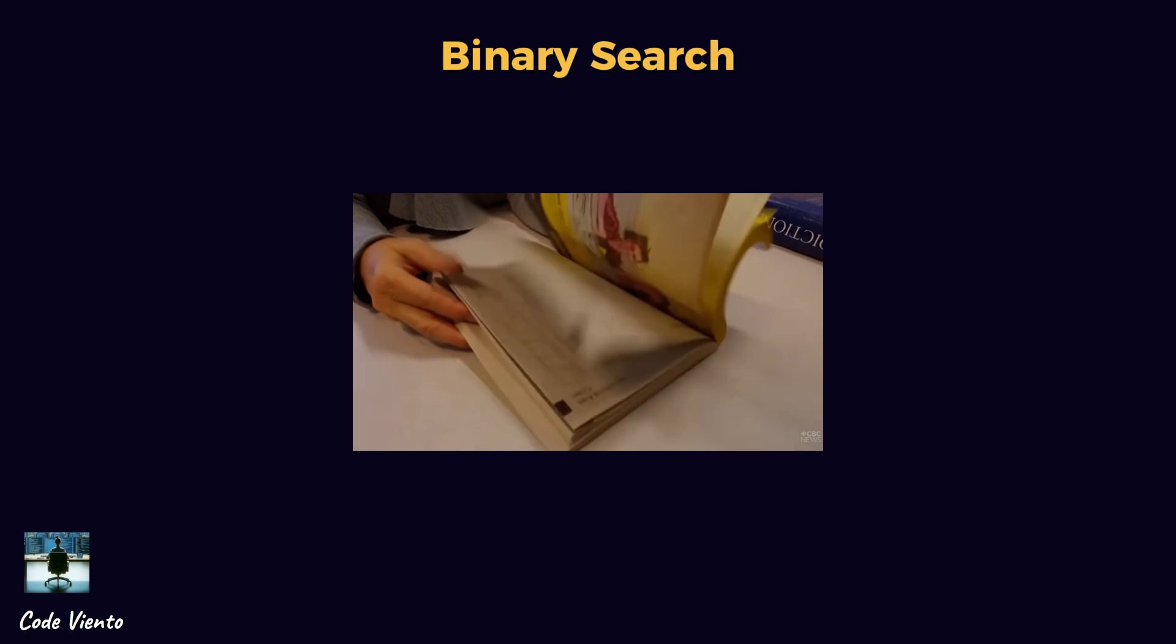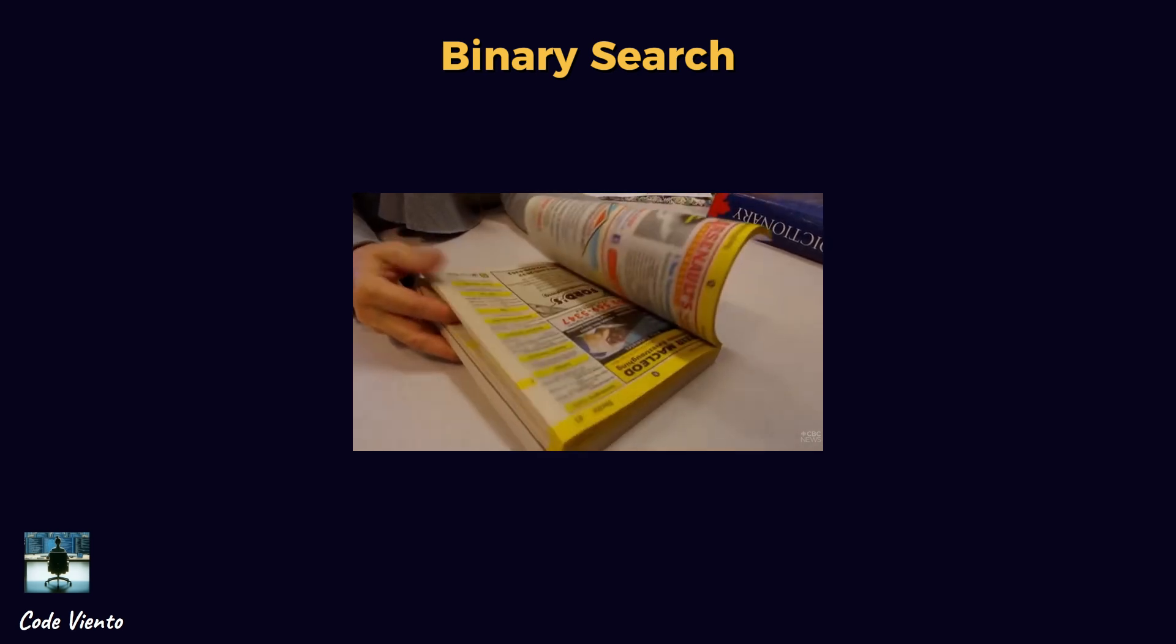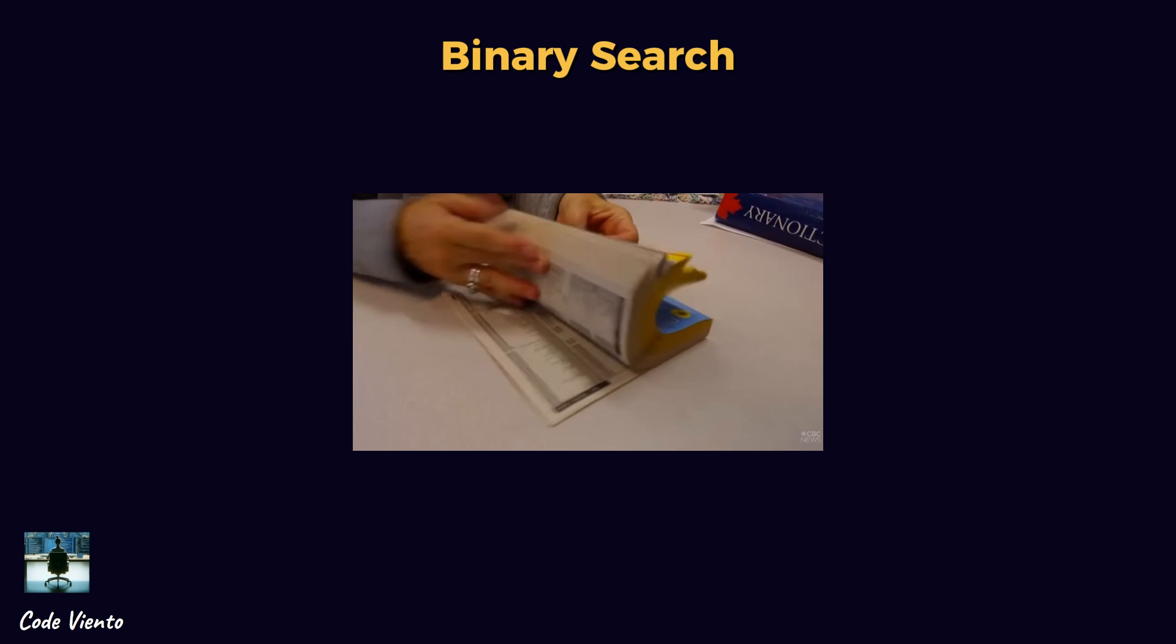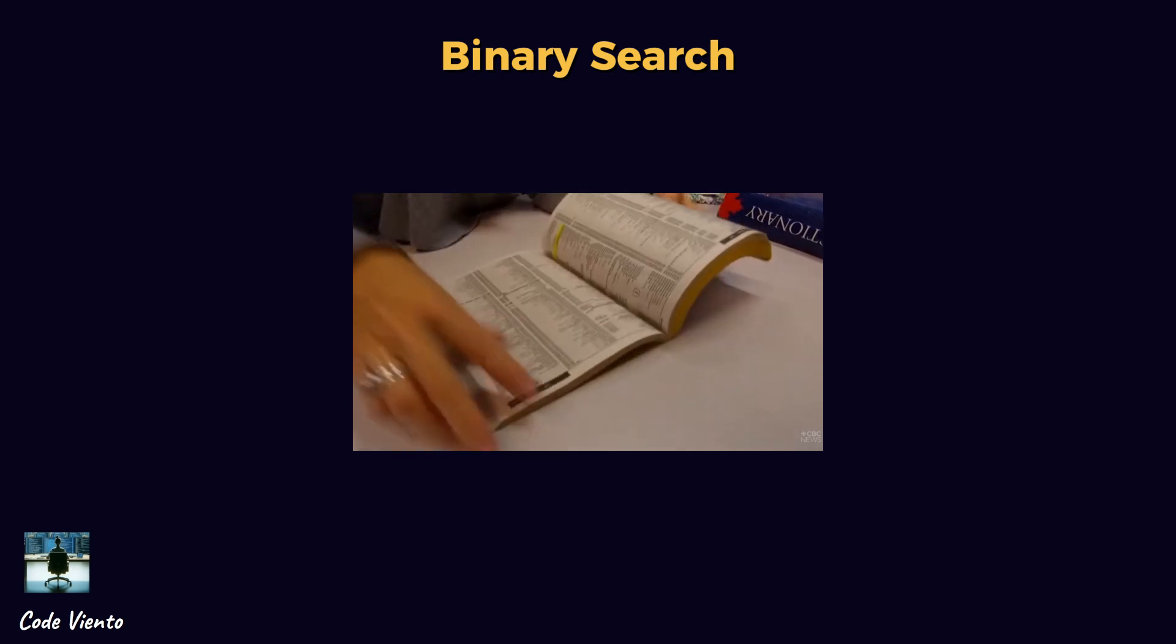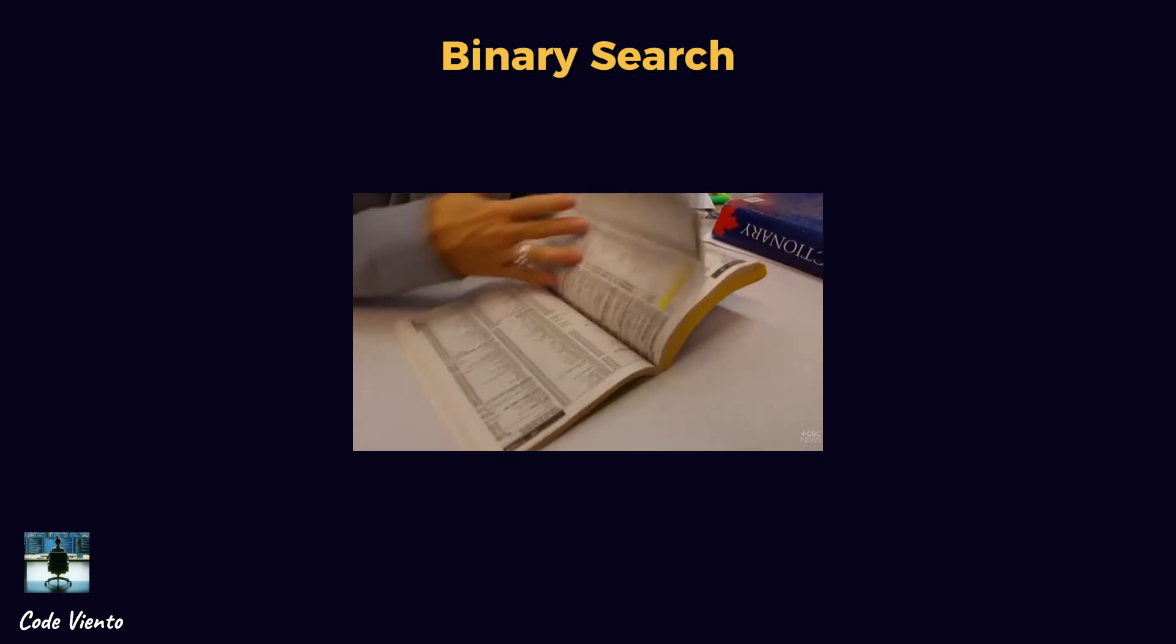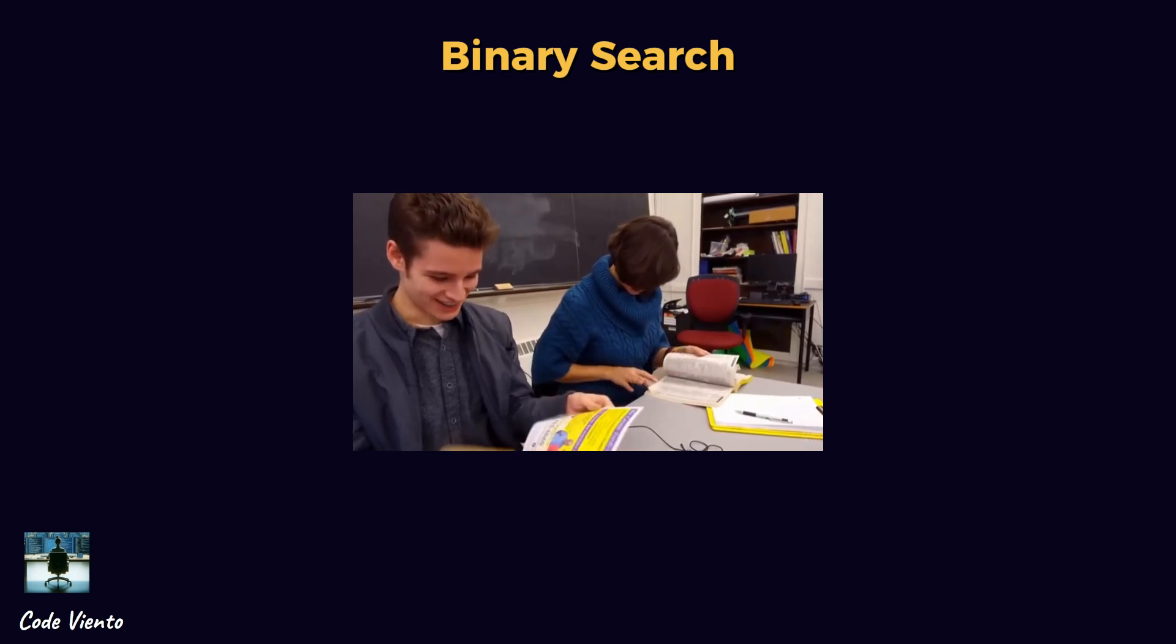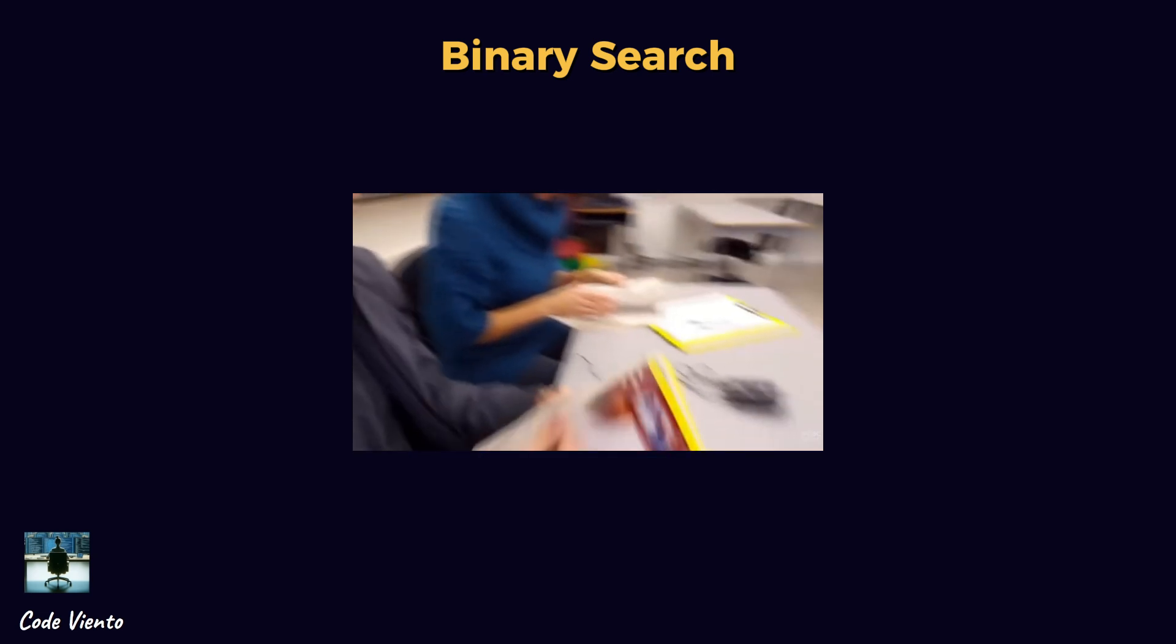For example, imagine a phone book where names are sorted alphabetically. Instead of scanning every page, you open the book to the middle and decide whether to look in the left or right half. This is exactly how binary search narrows down the location of the target.